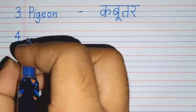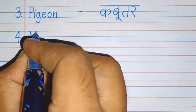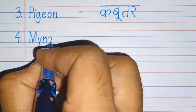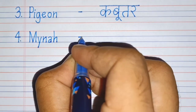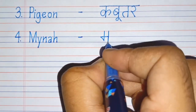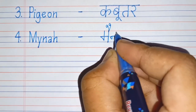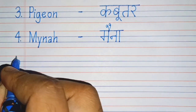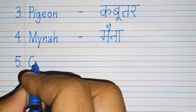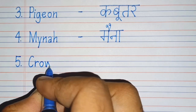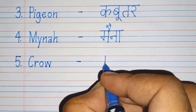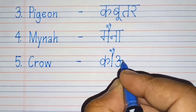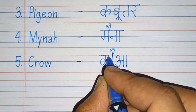Fourth number: M-Y-N-A-H, Mynah. Mynah means Mayna. Fifth number: C-R-O-W, Crow. Crow means Cowah.